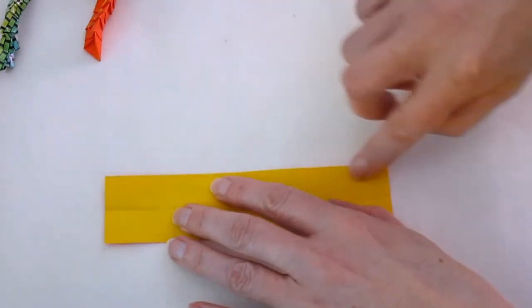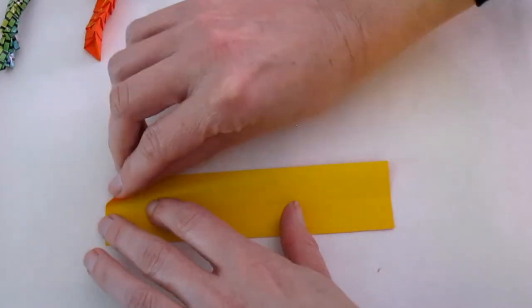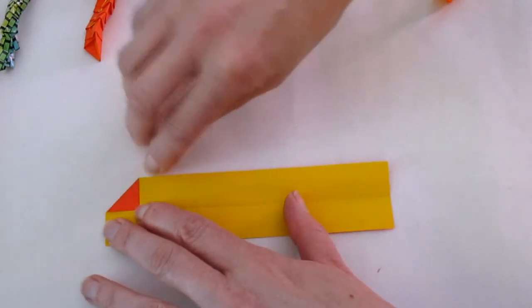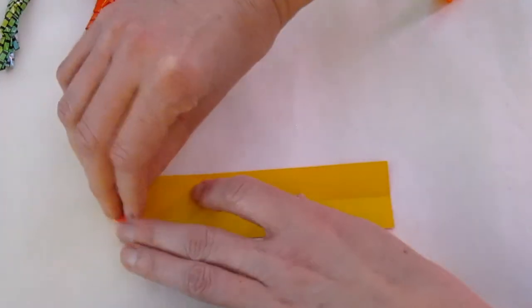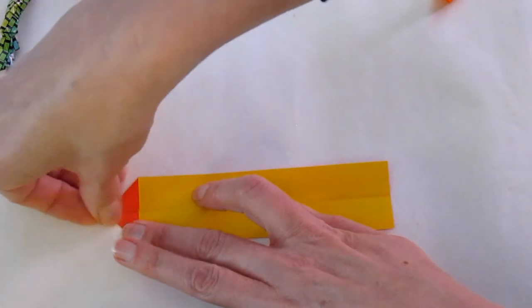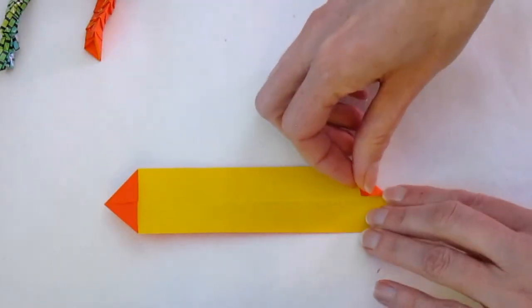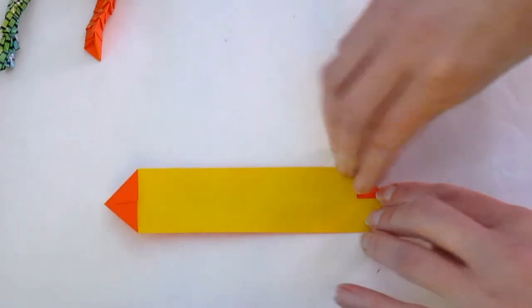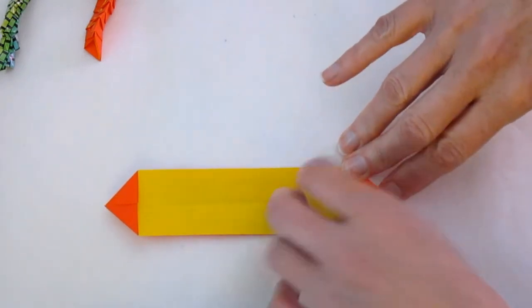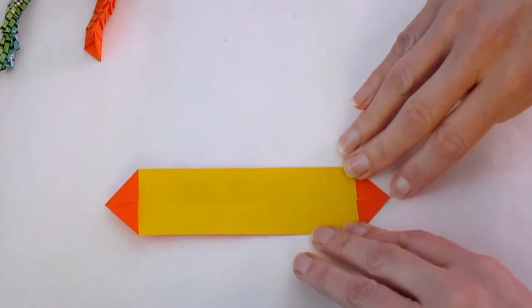And we're going to fold each of the corners into that center line. So fold the corner over, right side and left side on one end, and right side and left side on the other end.